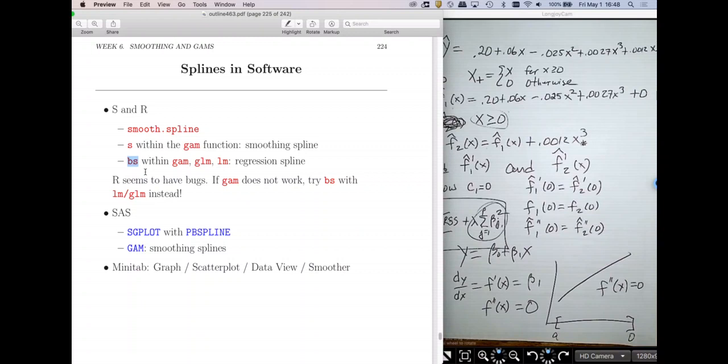Now, there's another set of functions. It's called the BS for B-spline. We talked a little bit about B-splines in my last video. So BS can be used with any of the modeling functions that we've already talked about. So you can use BS in GLM, LM, or GAM. You can only use S in the GAM function.